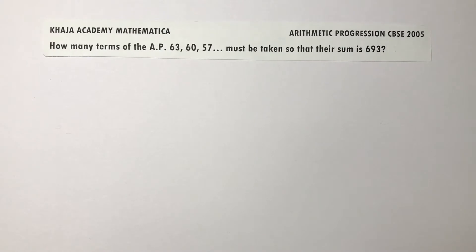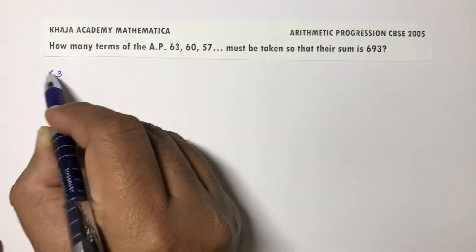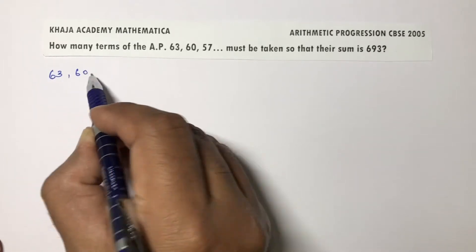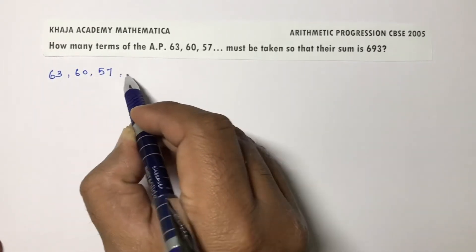How many terms of the AP 63, 60, 57 must be taken so that the sum is 693? So here the series is 63, 60, 57 and so on.